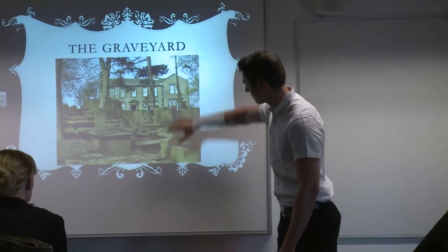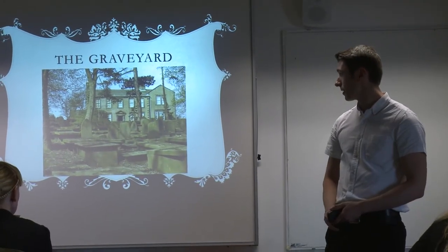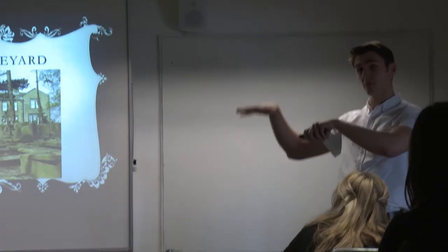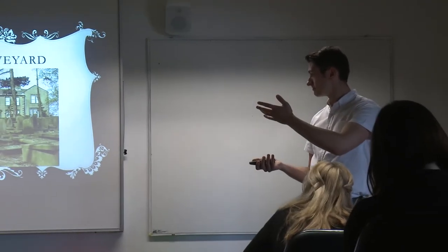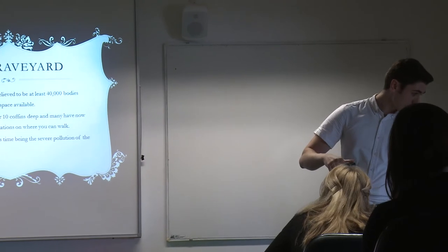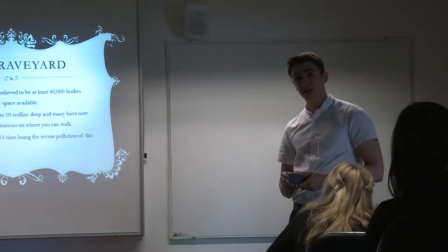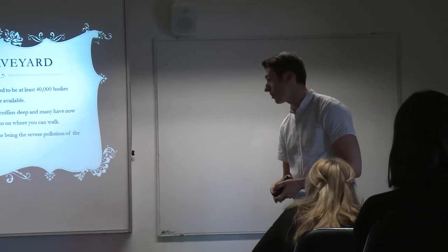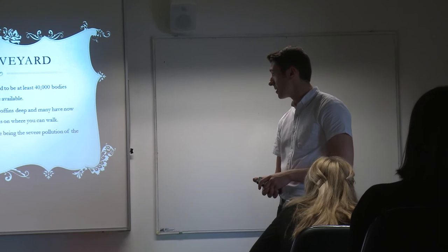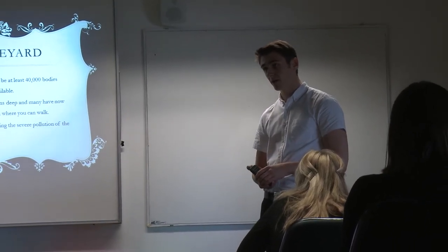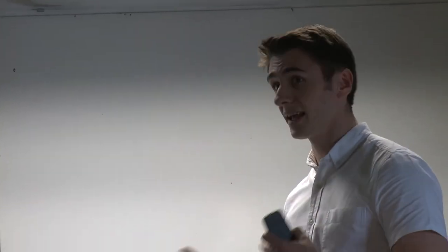As the Brontës are looking on the Parsonage, it didn't have this new bit on the side, but it is still the same building. The reason for it was the graveyard, which is just in front of the Parsonage at the top of the hill. And because of the massively high death rate, the graveyard itself was massively overpopulated. There are believed to be at least 40,000 bodies buried in the graveyard. I have been there, and I would say it's not much bigger than maybe half the size of a football pitch — and many of the graves are well over ten coffins deep.